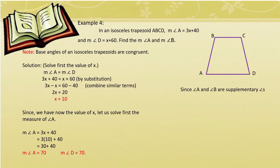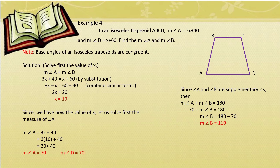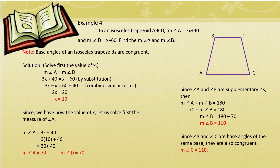Next, solve for angle B. Since angle A and angle B are supplementary, measure of angle A + measure of angle B = 180°. Substitute angle A = 70°: 70 + angle B = 180. Therefore, angle B = 180 − 70 = 110°. Since angle B and angle C are base angles of the same base, angle C also measures 110 degrees.